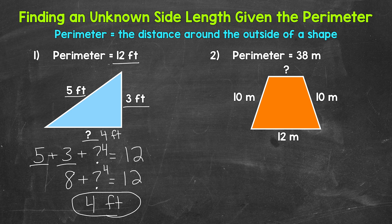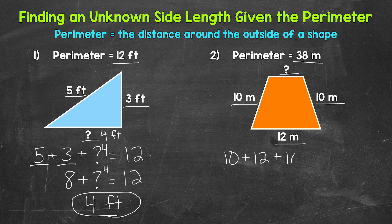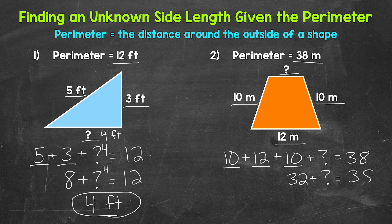Let's move on to number two, where we have a quadrilateral — specifically a trapezoid. We have a perimeter of 38 meters with given side lengths of 10 meters, 12 meters, and 10 meters. We need to find the remaining side length. So: 10 meters plus 12 meters plus 10 meters plus what equals 38 meters. Adding what we were given: 10 plus 12 is 22, plus 10 is 32 meters.